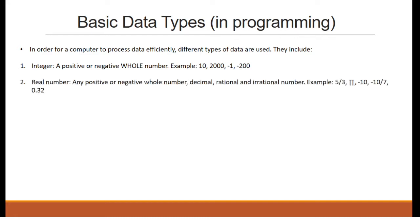Real number: any positive or negative whole number, decimal, rational and irrational number. For example, 5/3, pi, -10, -10/7, 0.32.